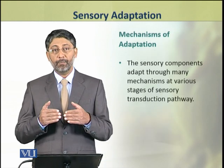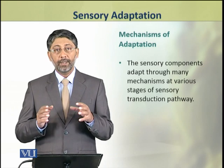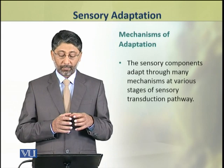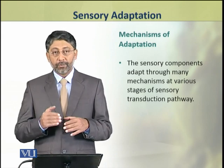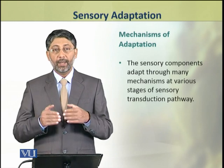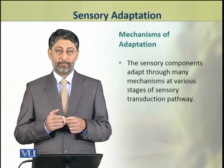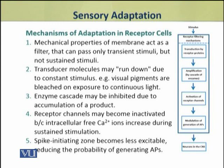Now we shall discuss the mechanism of adaptation. The sensory components of the nervous system adapt through a variety of mechanisms at all levels of the sensory transduction pathway. Most of these mechanisms take place at the receptor cell level, while some also take place at the neuron and central nervous system level.